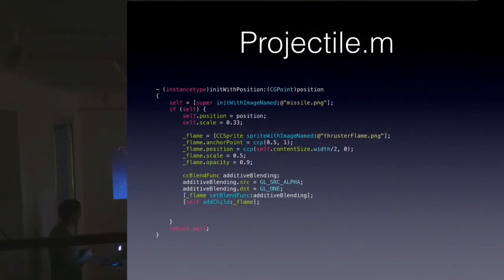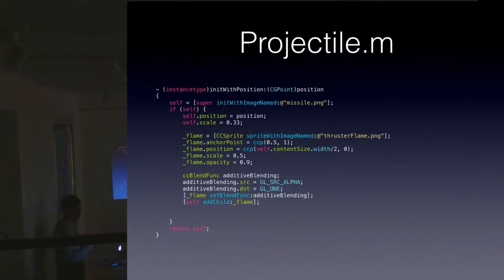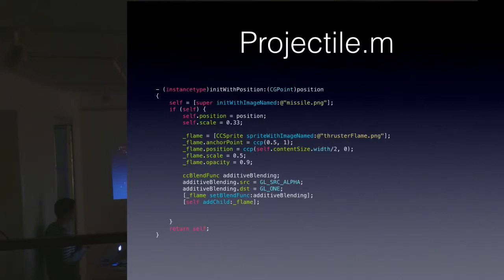Here you can see the basic code for the missile. It's just a couple of lines — of course you need a couple of images, and I thank Google Images for all the artwork in this game. The only tweaking is that I'm using additive blending on the flame behind the missiles.